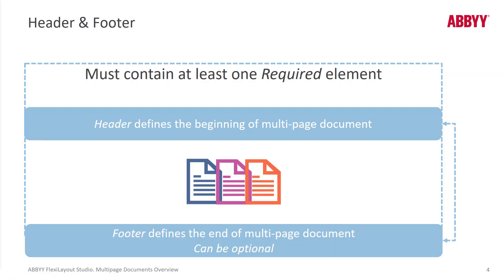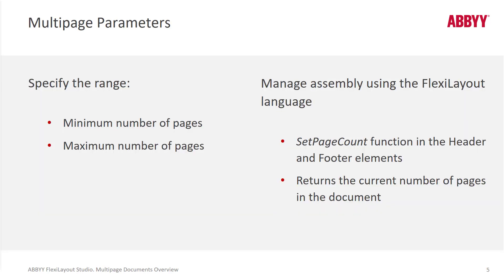The header and footer must contain at least one required element. The recommendation is that headers and footers contain only required elements. When FlexiCapture processes a document definition based on a FlexiLayout, it opens the header and footer and checks those required elements to see if there's a match. This really speeds up your layout's processing.